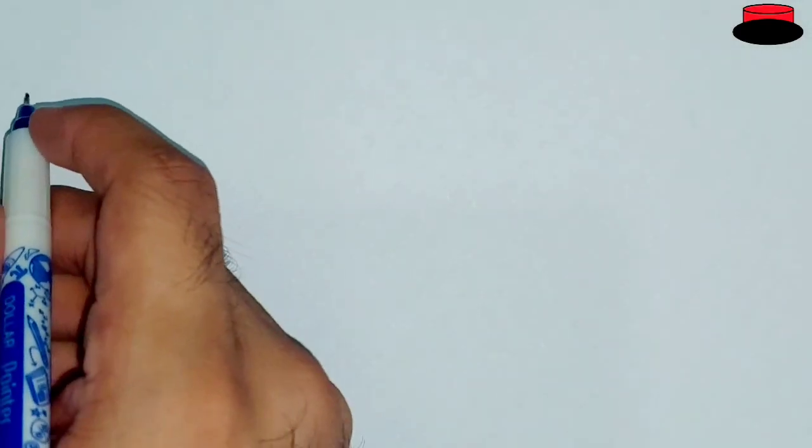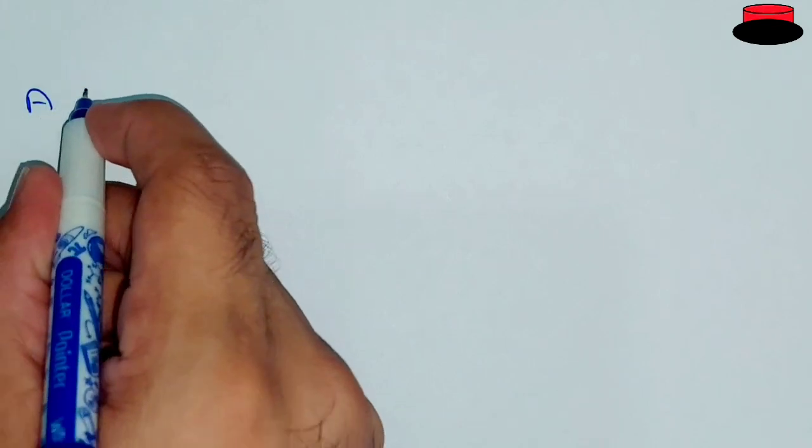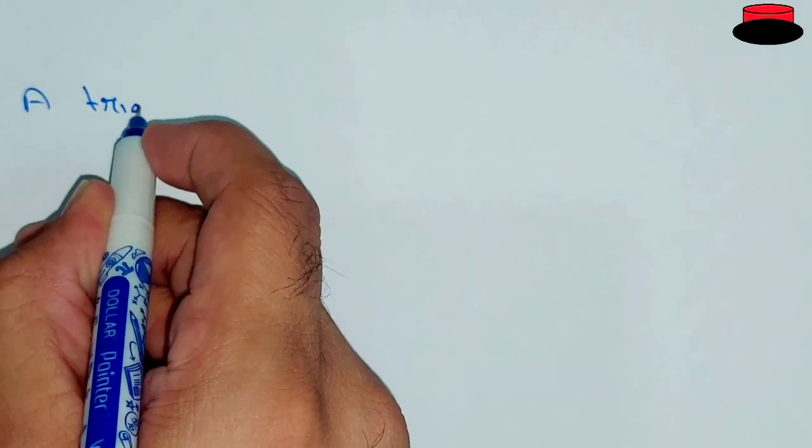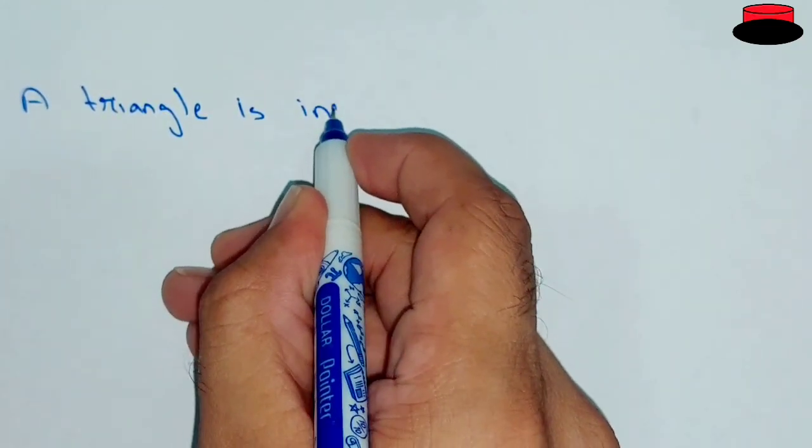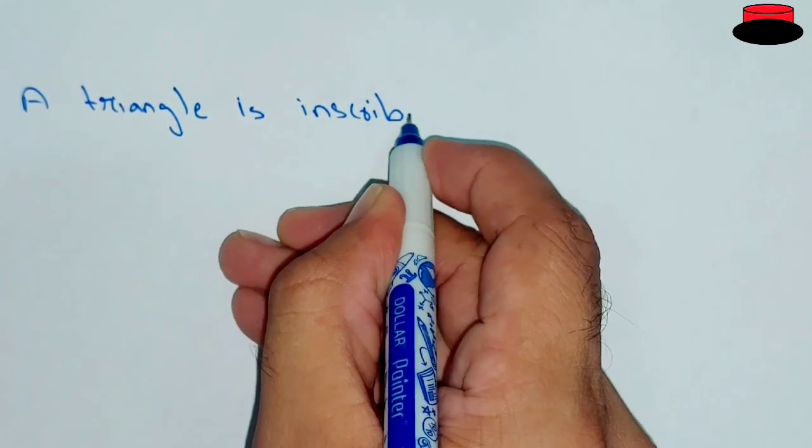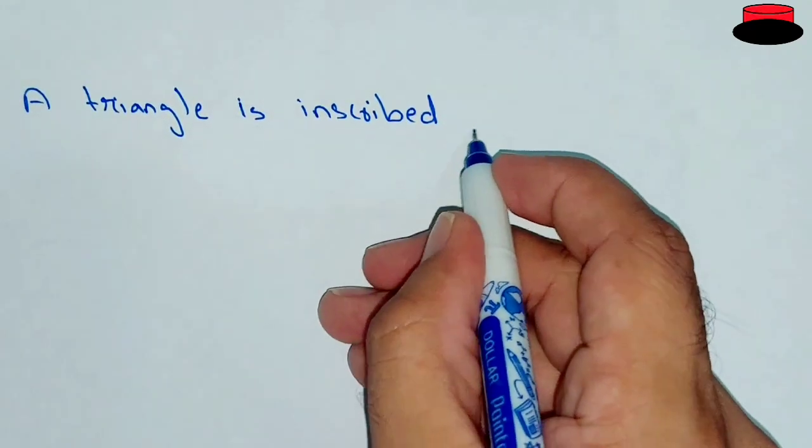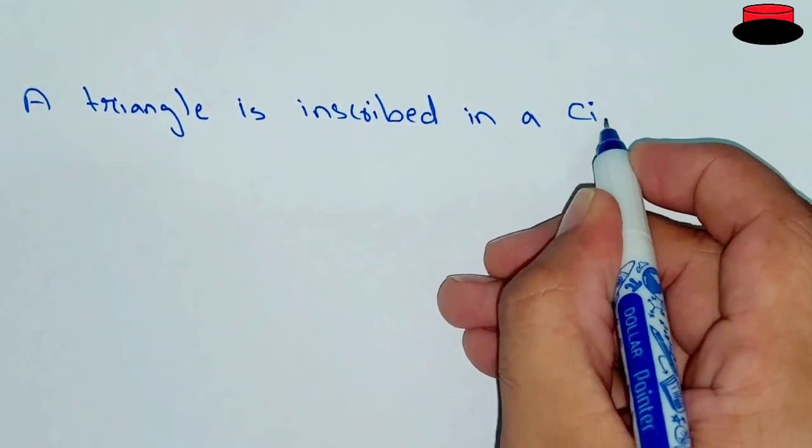Hello, what's up guys, welcome to the new video. In this video here we have this question: a triangle is inscribed in a circle.